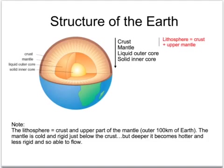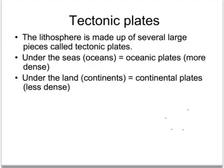The lithosphere is the outer layer of the earth which comprises the crust and the upper part of the mantle. Rather than being made of just one piece, the lithosphere is actually made up of several large pieces called tectonic plates. Underneath the seas they are called oceanic plates, and underneath the land are continental plates. The oceanic plates are more dense, or heavier for their size.